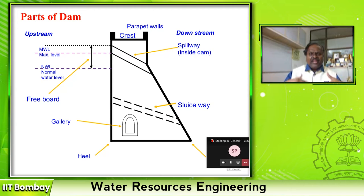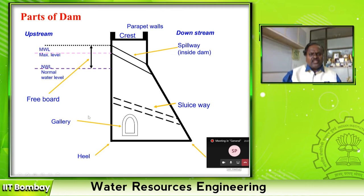We have seen in the previous chapter how to estimate the live storage or useful storage of the reservoir. This goes on increasing — sometimes it may go above the useful level, which is called flood storage, and we must give provision for flood storage. The dam at the bottom rests on a good foundation. The upstream-side bottom corner is called the heel and the downstream bottom corner is called the toe.